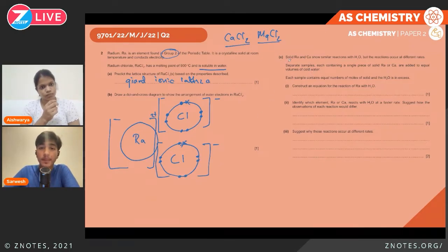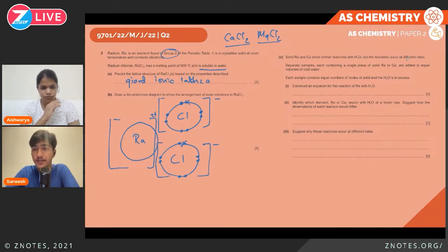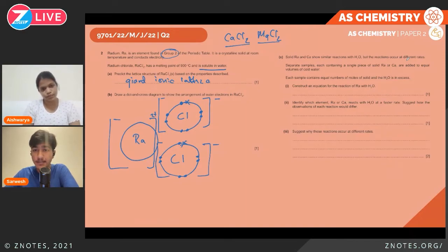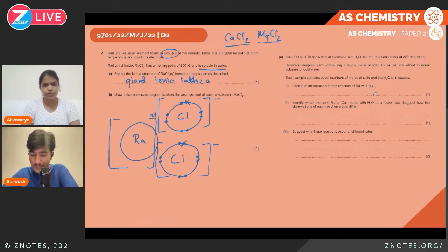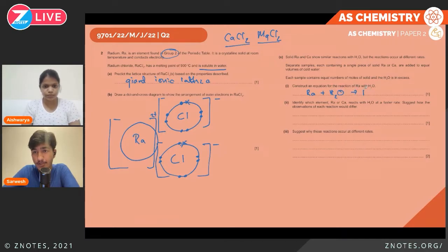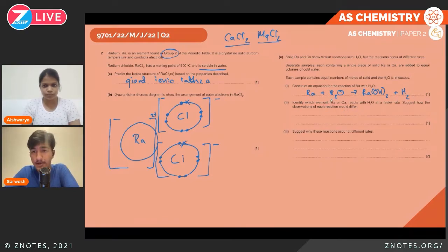Solid radium and calcium show similar reactions with H₂O but at different rates. Separate samples containing equal moles of radium or calcium are added to equal volumes of water in excess. We need to construct an equation for the reaction of Ra with H₂O. Similar to calcium, Ra reacts with water to produce Ra(OH)₂ — which is a base — and hydrogen gas.